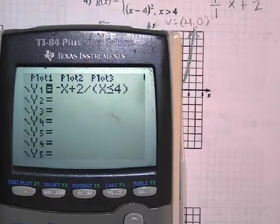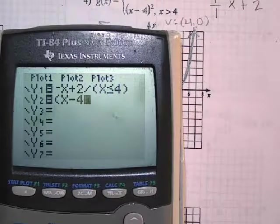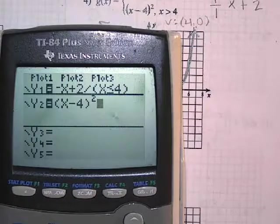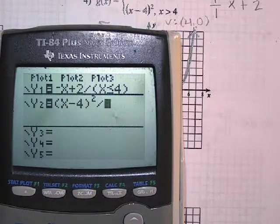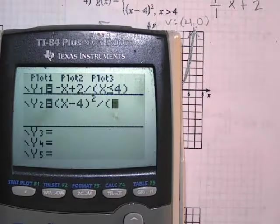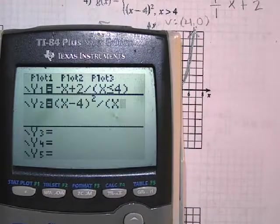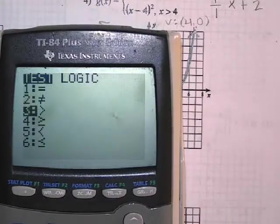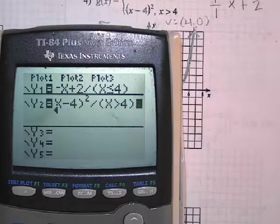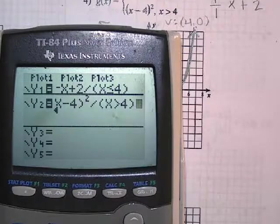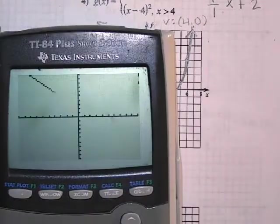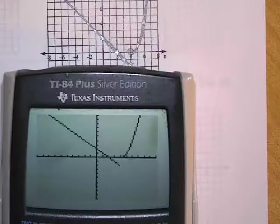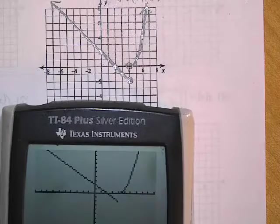Okay. Second line. We're going to do x minus four squared. And then the slash. And then we've got our parenthesis and the x. And how do I get the greater than symbol? Second math. Greater than. Four. So when you graph it, it should look like what you have on your paper. Does it look like what we have? Whoa, we did it right. Marvelous.